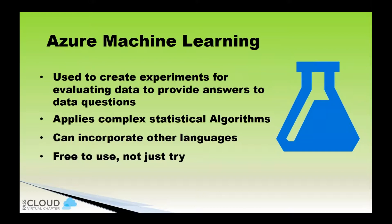Azure Machine Learning is used for creating experiments. One thing that Azure Machine Learning does is it provides a really good way to do very complex data analysis without a whole lot of experience. It's got a very great UI, including a lot of the most complex algorithms commonly used in machine learning, and it's also very extensible. You can use R or Python and incorporate that within your machine learning experiment. A lot of companies are just taking their existing R code and putting it into Azure ML and deploying that as a web service as a quick and easy way to deploy a model they've created in R.